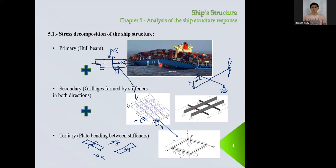Then we can see, for example at the bottom, that we have the plate, the longitudinal, and the transversal. What we can do is represent this as a grillage. Each one of these is welded to the plate. So we can represent the combination of this plus some plating as the inertia for this beam, similarly in the other direction. This element has a certain inertia, but we have to include the piece of plate to which it is welded. We calculate the inertia, and this is the beam. After that, we apply the loading and calculate the response of this structure.